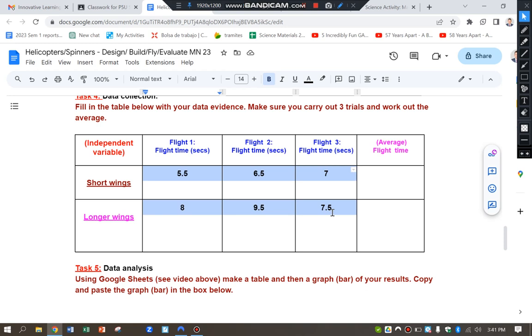And now I want to work out the average by adding these three up and divided by three. I'm going to use Google Sheets to do that.